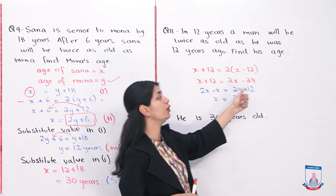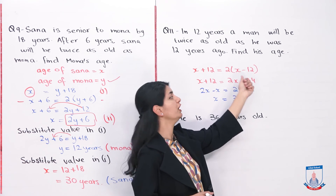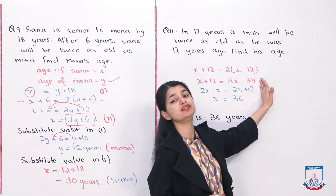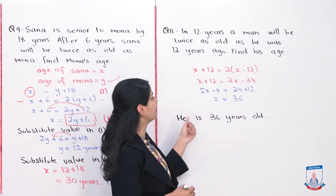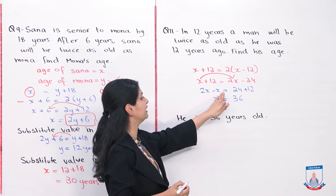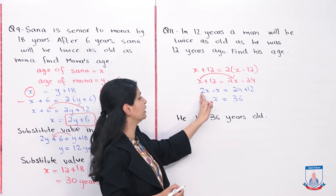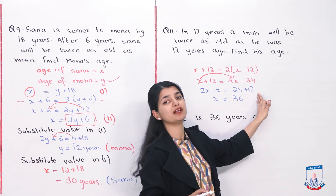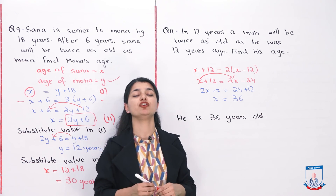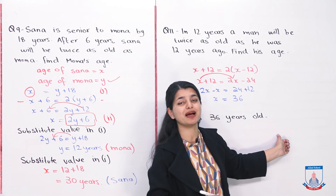The equation is: 2 times x minus 12 equals x plus 12. Opening the bracket gives 2x minus 24. Rearranging, x plus 12 equals 2x minus 24. Subtracting x from both sides and adding 24 to both sides gives 2x minus x equals 24 plus 12, so x equals 36. The man is 36 years old. Write the answer as a statement.